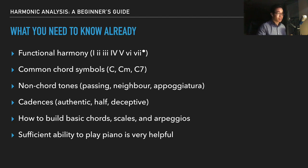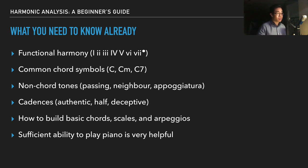If you want to analyze a piece using harmonic analysis, you should understand functional harmony and be able to use Roman numeral chord symbols from I to VII. In the context of a major scale, the I, IV, and V are major — hence them being capitalized — while the II, III, and VI are minor chords, and the VII is a diminished triad.